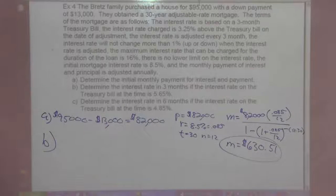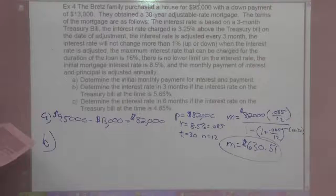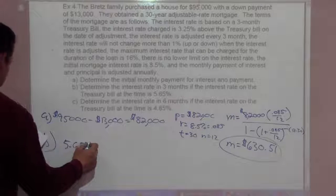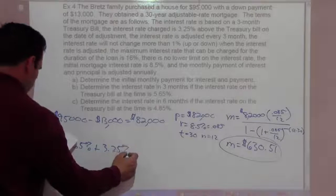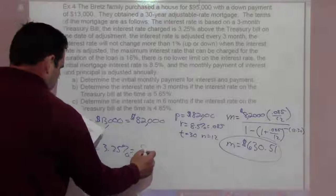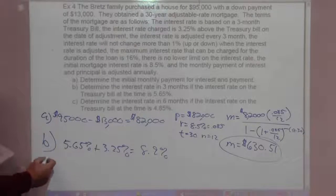For B, to determine the interest rate in three months if the interest rate on the Treasury bill at that time is 5.65, it will be 5.65% plus the 3.25% above the Treasury bill. That's going to be 8.9%. So adjust up from 8.5 to 8.9.